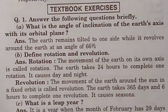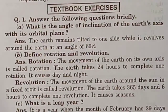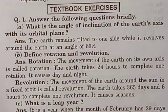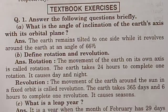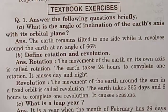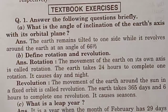Define rotation and revolution. Rotation — the movement of the Earth on its own axis is called rotation. The Earth takes 24 hours to complete one rotation. It causes day and night.